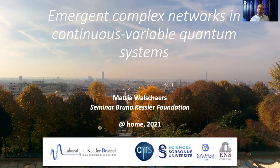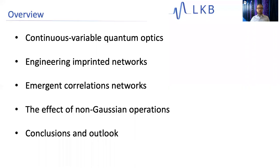This talk is going to assume that you know a little bit about networks, but there will also be quite an extensive introduction into continuous variable quantum optics. The title is 'Emergent Complex Networks in Continuous Variable Quantum Systems.' I'll start by introducing the framework of continuous variable quantum optics, then discuss imprinted networks, emergent correlation networks, how non-Gaussian operations affect these emergent features, and finally conclusions and an outlook.